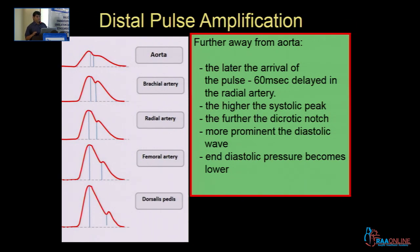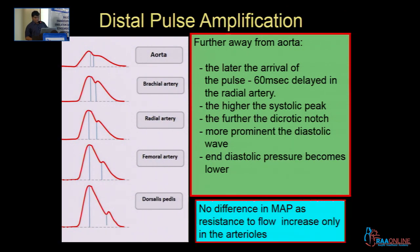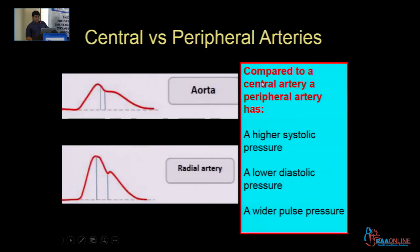That is very important: you have a difference in the systolic and diastolic pressure, but there is no difference in the mean arterial pressure. This is important to notice because your arterial pressure tracing changes depending on whether you place the line in the aorta or in the radial artery. Compared to the central artery, a peripheral artery has a higher systolic pressure, a lower diastolic pressure, and a wider pulse pressure.